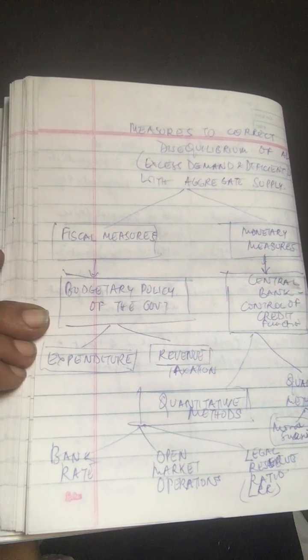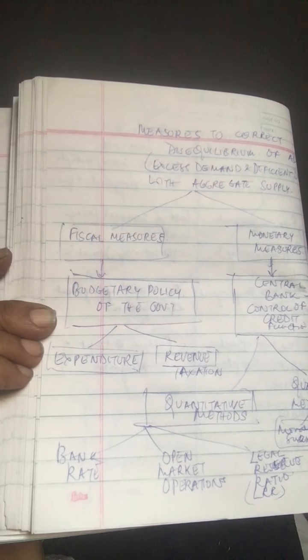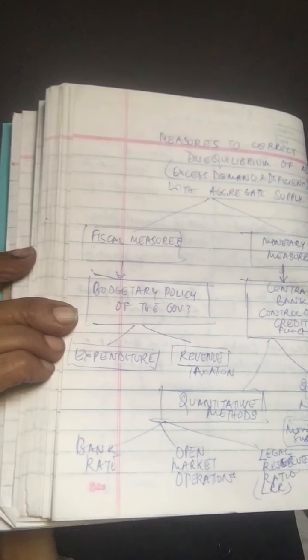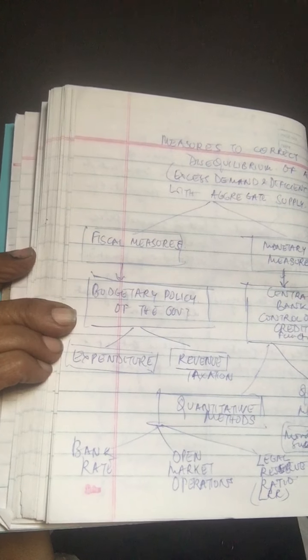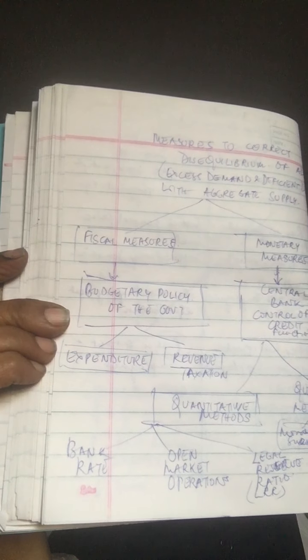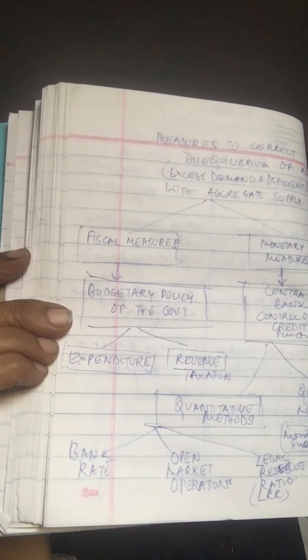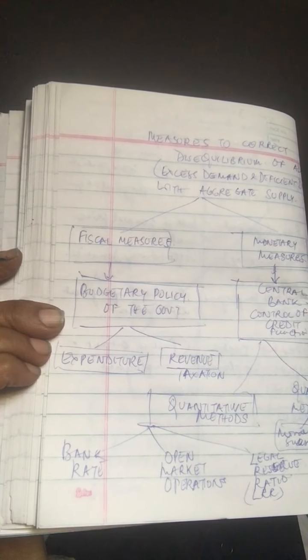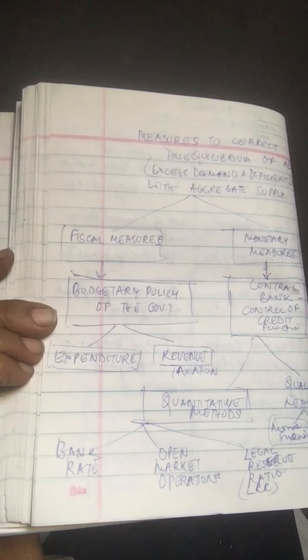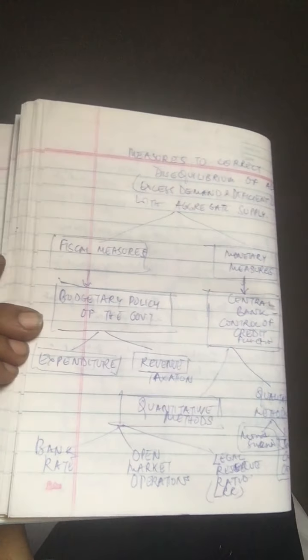In the qualitative methods we have margin requirements — the difference between the value of security and the amount of loan. Then there is moral suasion, which involves persuading and directing commercial banks, telling them what approach is appropriate in an inflationary or deflationary policy. Finally, there are selective credit controls in consumer credit. These are the measures we will be covering in detail.